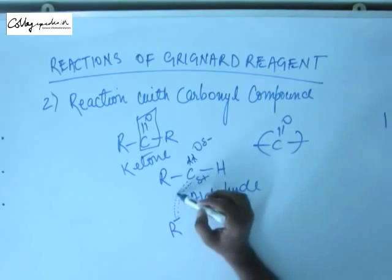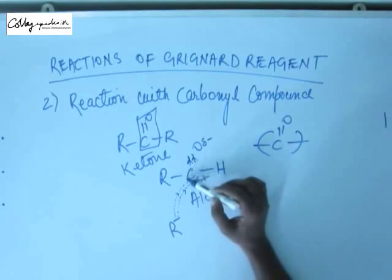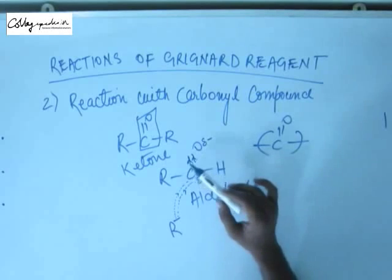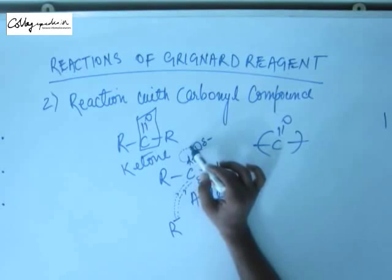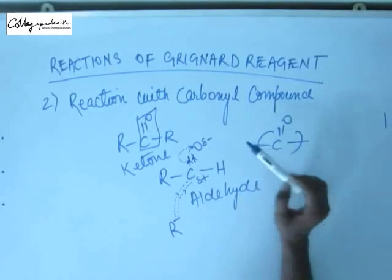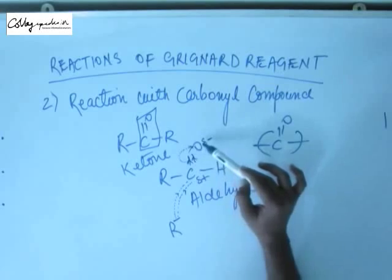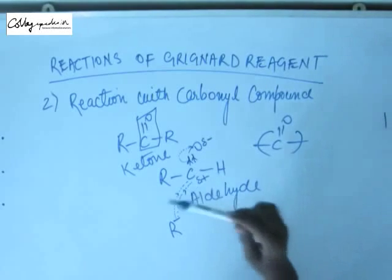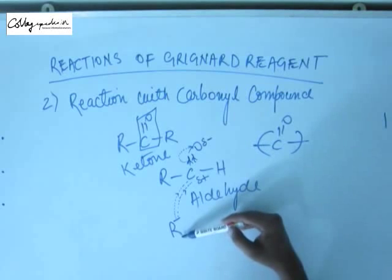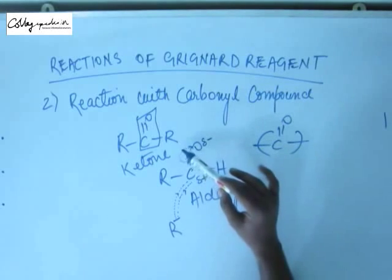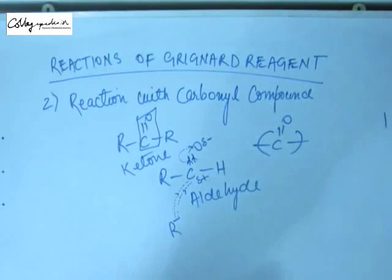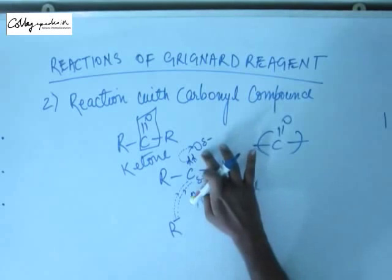The mechanism is as follows: electron density begins transferring from R⁻ to the carbonyl carbon. As electron density flows into this carbon, it would exceed eight electrons, so it simultaneously starts losing electron density from the C=O pi bond, shifting that density onto oxygen. As electron density moves from R⁻, the negative charge on R decreases. As electron density moves onto oxygen, the negative charge on oxygen increases. Gradually the charge on carbon decreases and the charge on oxygen increases.